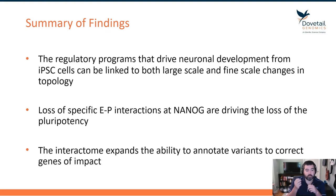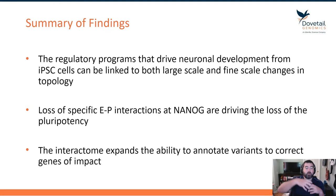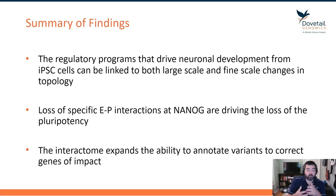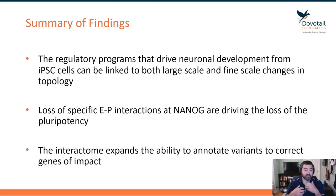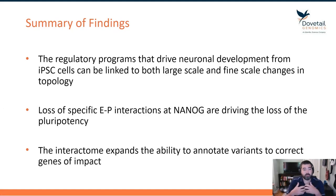Of those fine-scale features, we can actually go in and identify the specific enhancer-promoter interactions at NANOG that are driving the loss of that transcriptional program in NSC cells — leading to the loss of pluripotency that allows the neuronal cell type to start developing. The interactome also expands the ability to annotate variants and has large implications for reassigning SNPs as well as rescuing variants of unknown significance.